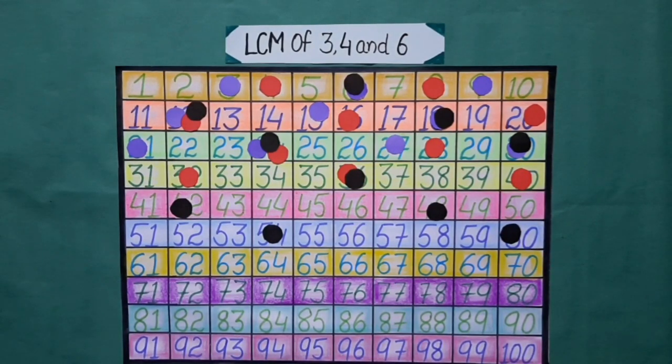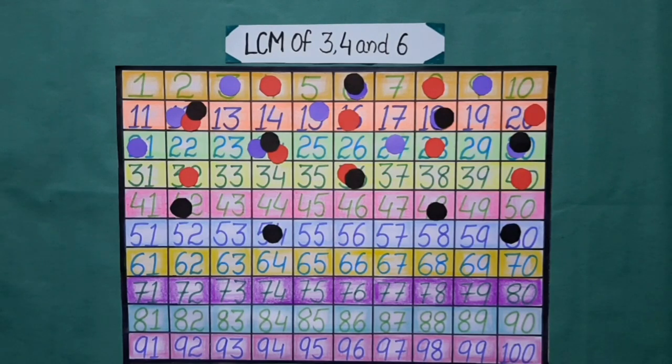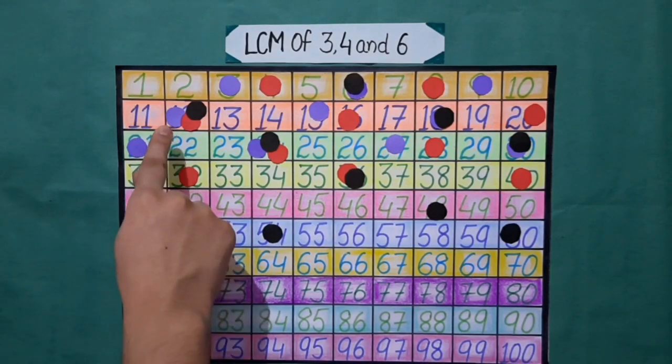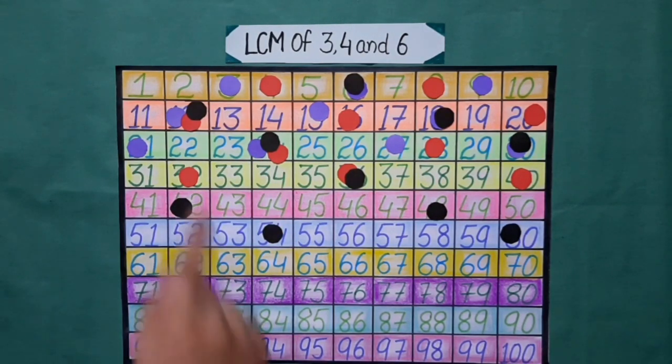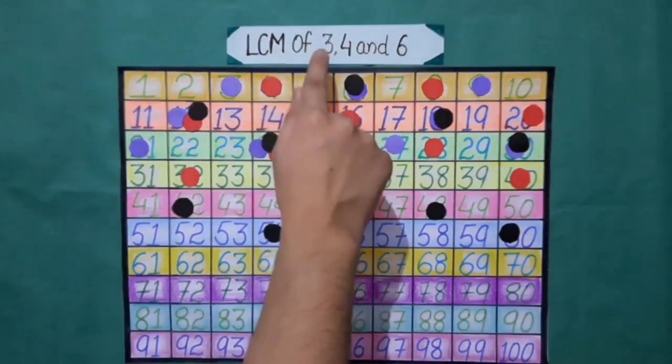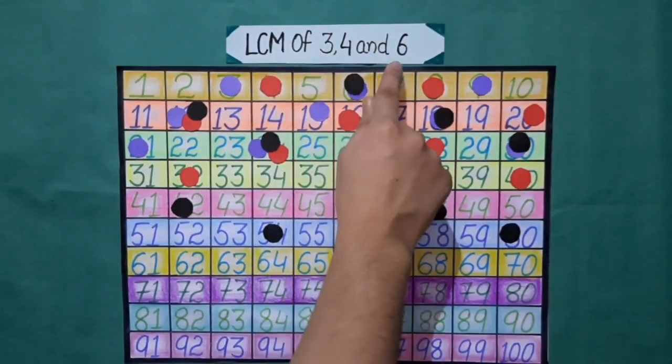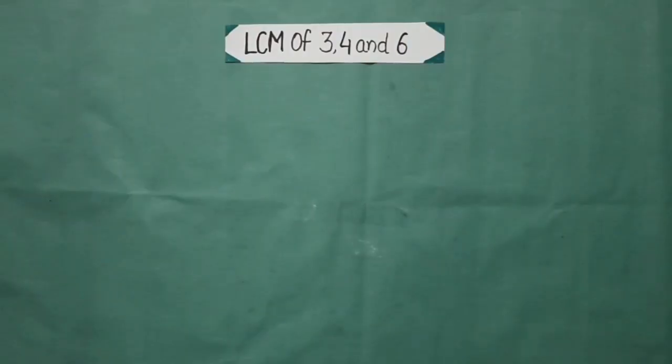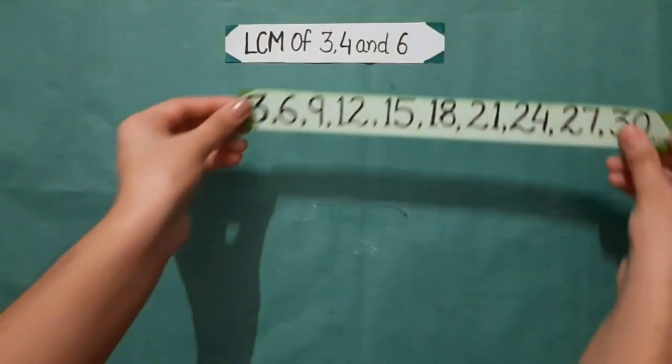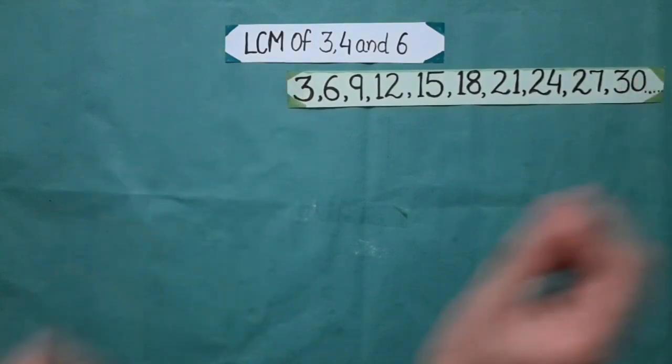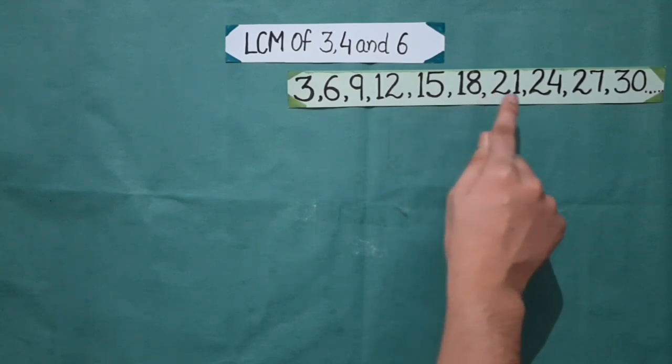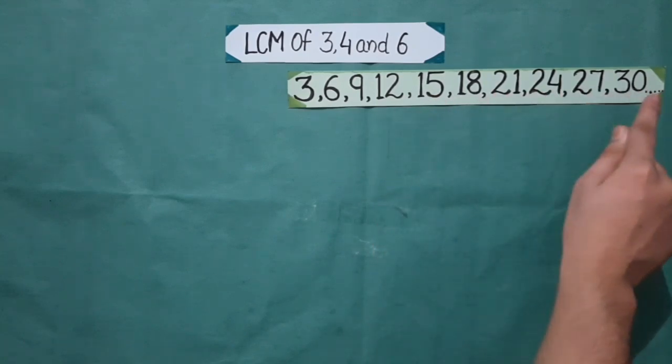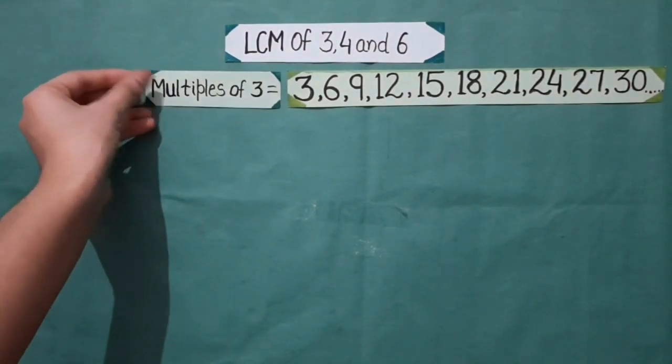Now see where 3 bindis of different colors are together in the same box, 12 and 24, but first number with 3 colored bindis is 12, so LCM of 3, 4 and 6 is 12. Now we see where the purple bindis were placed: 3, 6, 9, 12, 15, 18, 21, 24, 27 and 30 and these numbers are multiples of 3.